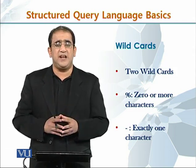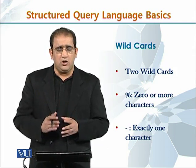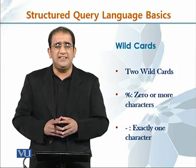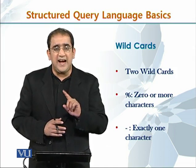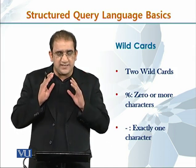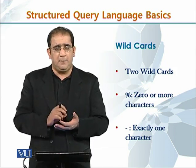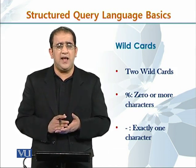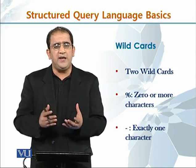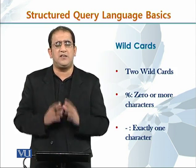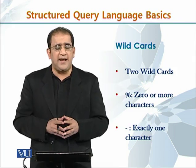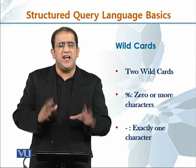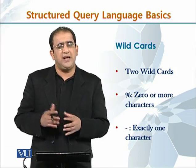The percent symbol means you can search for zero or more characters — any character. The dash or underscore symbol means you are looking for exactly one character, and that character can be anything. You are not specifying the exact character, but you are saying look for one character. For example, if you are looking for a country name that has at least 5 characters, you can use the dash wildcard to indicate there are 5, 6, or 7 characters.